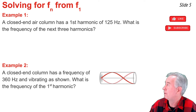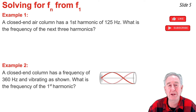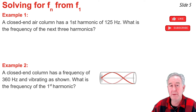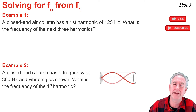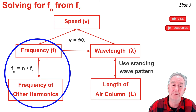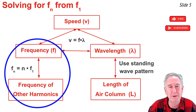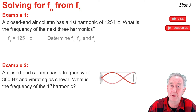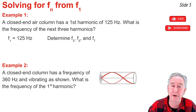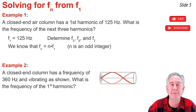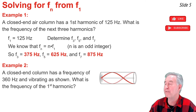In Example 1, I'm given the frequency of the first harmonic and asked to find the frequency of the next three harmonics. Since closed-end air columns only have odd-numbered harmonics, I'm looking for F3, F5, and F7. Using Fn = n × F1 with F1 = 125 Hz, I multiply 125 Hz by 3, by 5, and by 7 to get those frequencies.